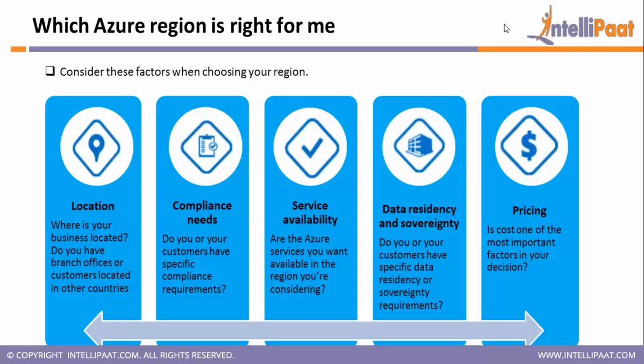There is also a chance that for the same service, one region charges you some X amount while another region may charge X plus one. Pricing can be different from one region to another, so you can look for which one is cheaper to operate. When you plan your migration or hosting, you can look at all these options — location, compliance, service availability, data sovereignty, and pricing — to decide which region to go with.